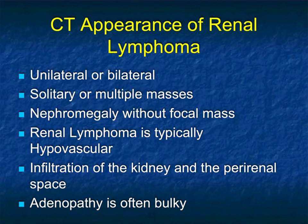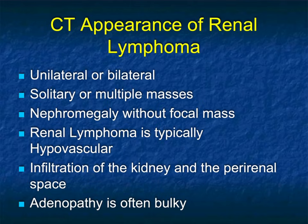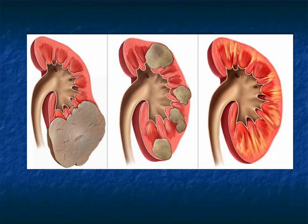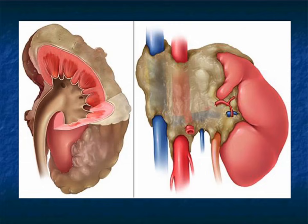Regarding the CT appearance: unilateral or bilateral, solitary or multiple masses, infiltration or nephromegaly without a discrete mass. Lymphoma is typically hypovascular, which is why it can look similar to transitional cell. Infiltration of the peri- and pararenal space is very classic for lymphoma, and adenopathy can be bulky. Splenic, renal, or even bone lesions are all possible. Here are schematics showing a large solid mass, multiple masses, infiltration, perirenal space extension, or bulky adenopathy surrounding the IVC and aorta.